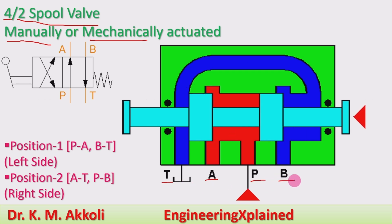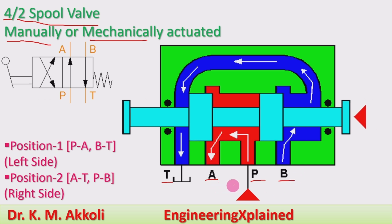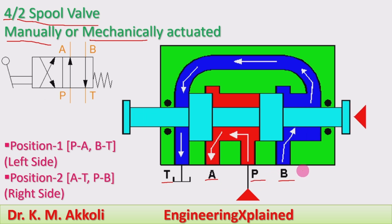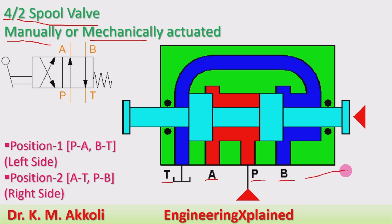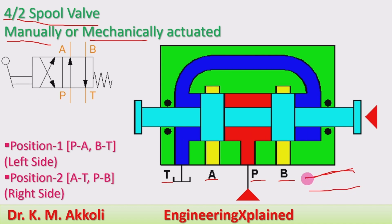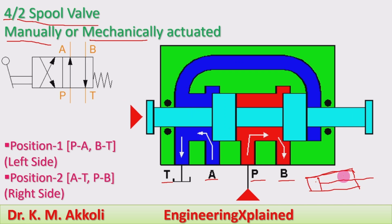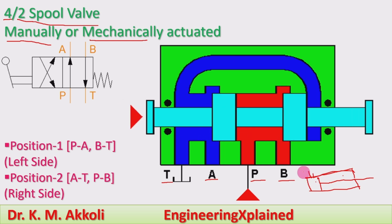The fourth port is the back port (B port). During the working stroke, fluid flows from the other side of the double acting cylinder through this back port. In a double acting cylinder, fluid flows on both sides — this is the piston side and this is the rod end side.